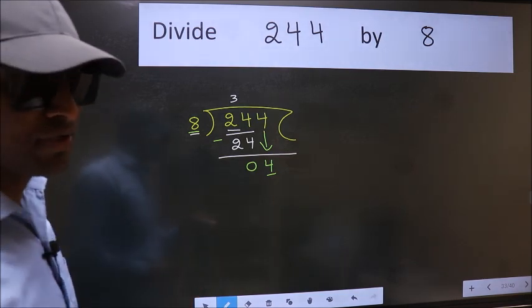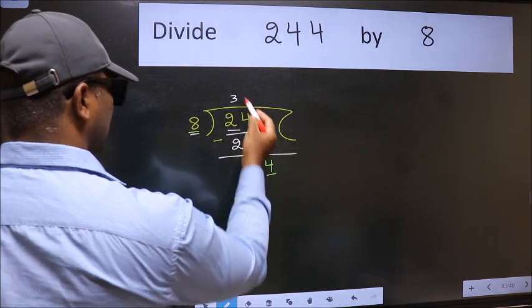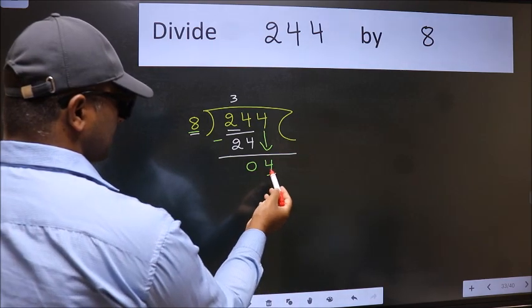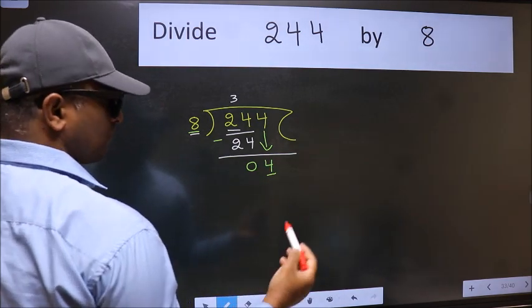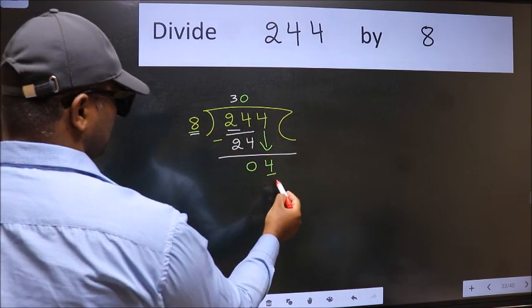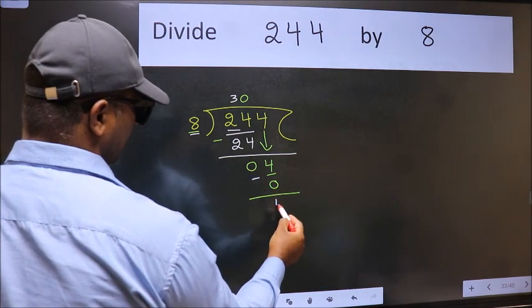Instead of that, what you should think of doing is, which number should we take here. If I take 1, we will get 8. But 8 is larger than 4. So what we do is, we take 0. So 8 into 0, 0. Now we subtract. We get 4.